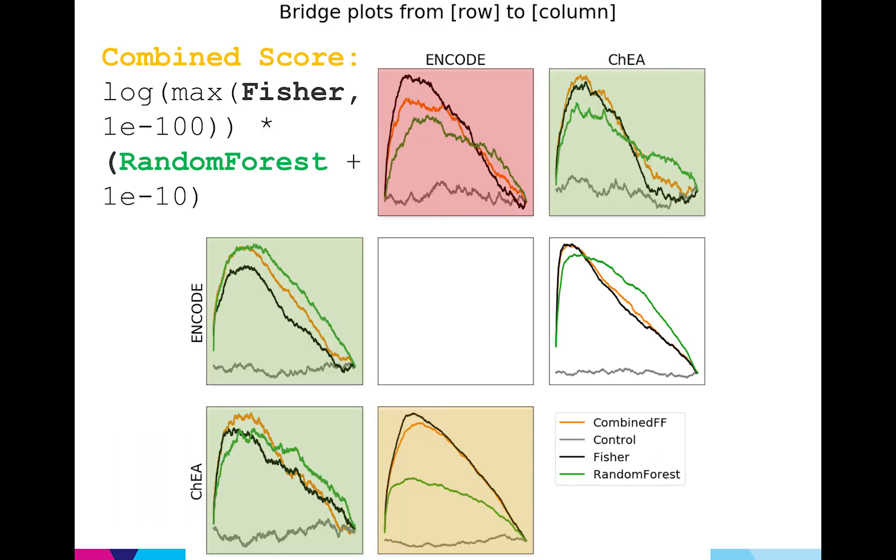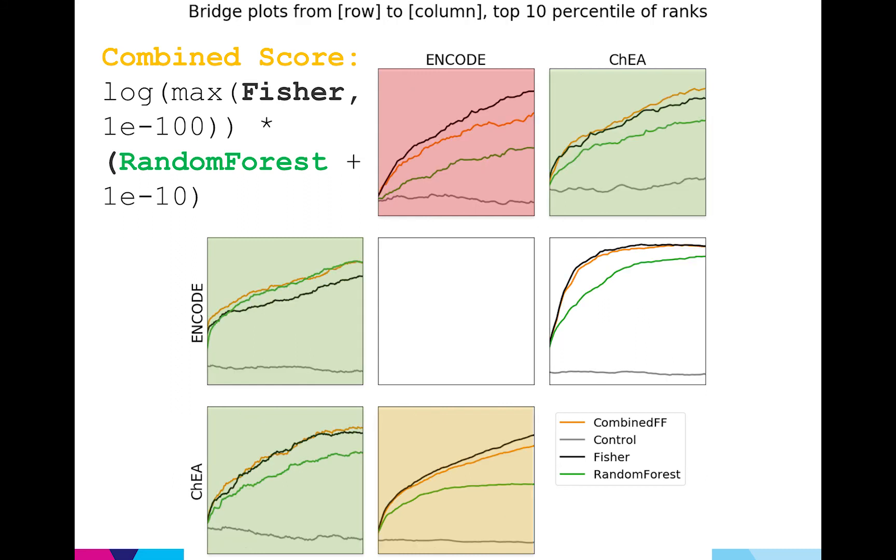This is the best result I got this summer. I combined the Fisher p-value with the random forest feature importance into a mathematical formula and I was able to get a result that kind of beat the Fisher's in three of the six cases. And previously where random forests did very horribly, like the box in yellow, my new method only loses out by a little bit. And I can confirm this by again zooming into the top 10 percentile.